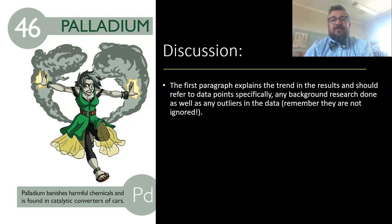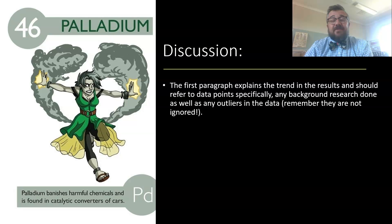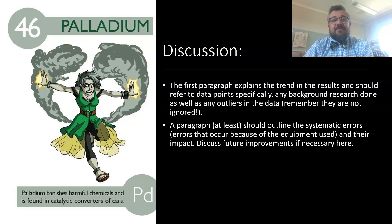Remember, we don't ignore outliers — that's really important. If you're ignoring data, you're cherry picking and that's bad science. At least mention that there were outliers, and hopefully if we can explain why there are outliers, even better. But if we can't, we need to acknowledge their presence.